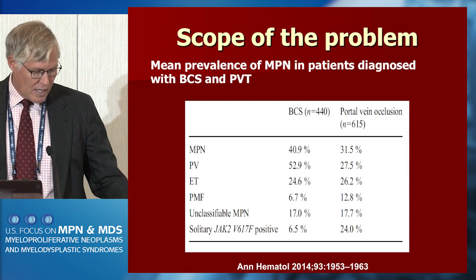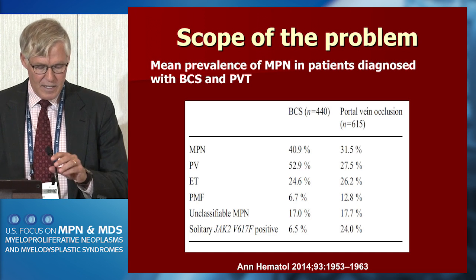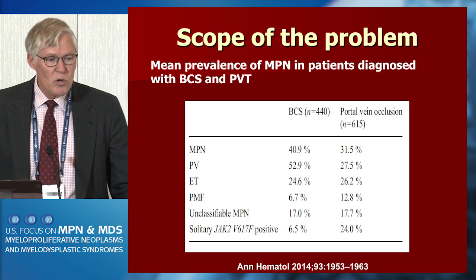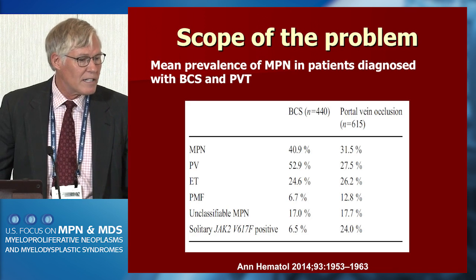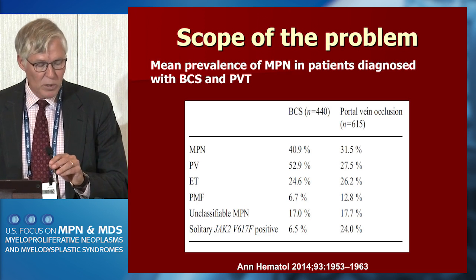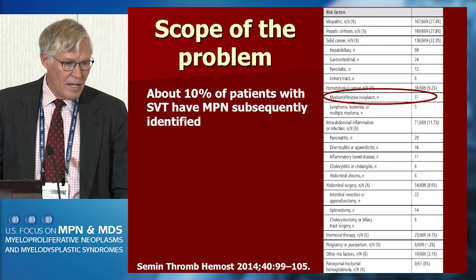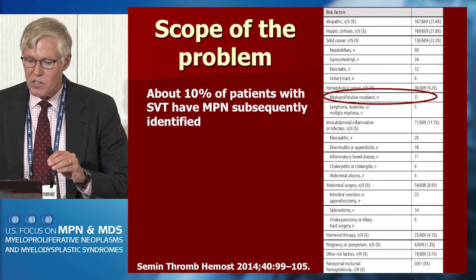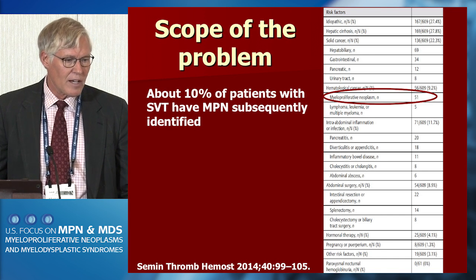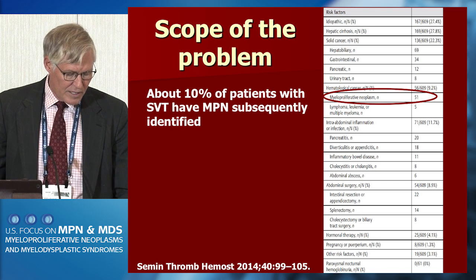Undiagnosed idiopathic splanchnic vein thrombosis often can foreshadow the presence of a previously unrecognized myeloproliferative neoplasm. Among centers that deal with this, if patients who otherwise have idiopathic splanchnic vein thrombosis are diagnosed — those thromboses not obviously due to structural abnormalities in the region — almost 40% of them will have an underlying myeloproliferative neoplasm identified, with the majority being polycythemia vera.